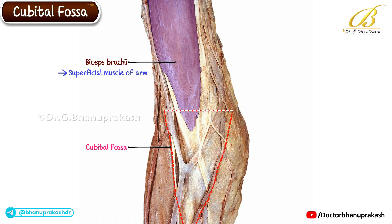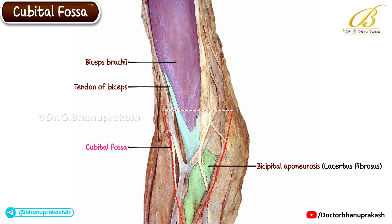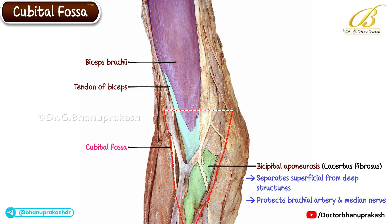If we trace it downward, the biceps brachii continues as the tendon of biceps and the bicipital aponeurosis, also known as the lacertus fibrosus. Although the tendon of biceps lies deep within the fossa and isn't clearly visible here, the bicipital aponeurosis can be appreciated. It separates the superficial structures from the deep structures, reinforcing the fossa and providing protection to the brachial artery and median nerve that lie beneath it.